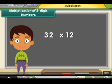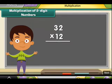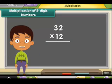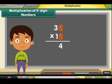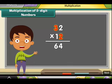Now let us multiply 32 by 12. Step 1: multiply 2 by 2 to get 4. Write 4 below the line at the ones place. Step 2: then multiply 3 by 2; the answer is 6. Place 6 below the line at the tens place.